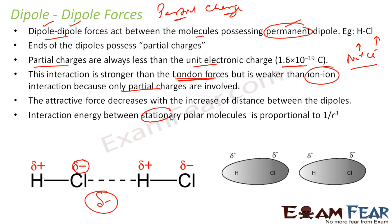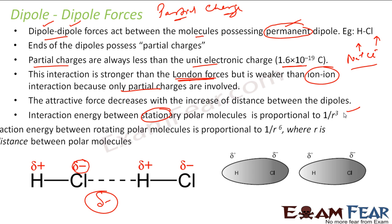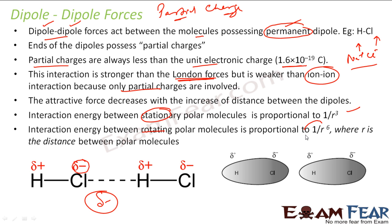The interaction energy varies for stationary and rotating polar molecules. The interaction energy for stationary polar molecules is proportional to 1/r³, while for rotating polar molecules it is also proportional to 1/r³. Scientists have proven this using lab results.